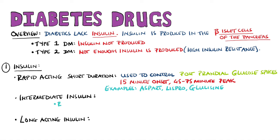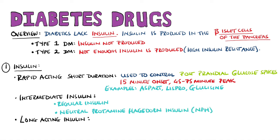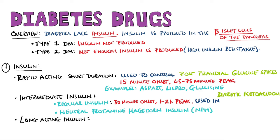Intermediate insulin includes regular insulin and neutral protamine Hagedorn insulin, also known as NPH insulin. Regular insulin has an onset of around 30 minutes and peaks between 1 and 2 hours. It is often used as a therapy for diabetic ketoacidosis and for hyperkalemia.